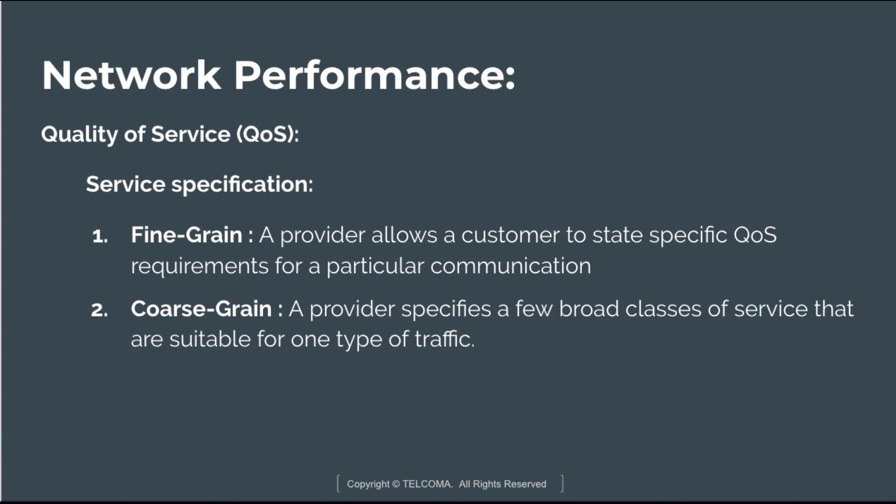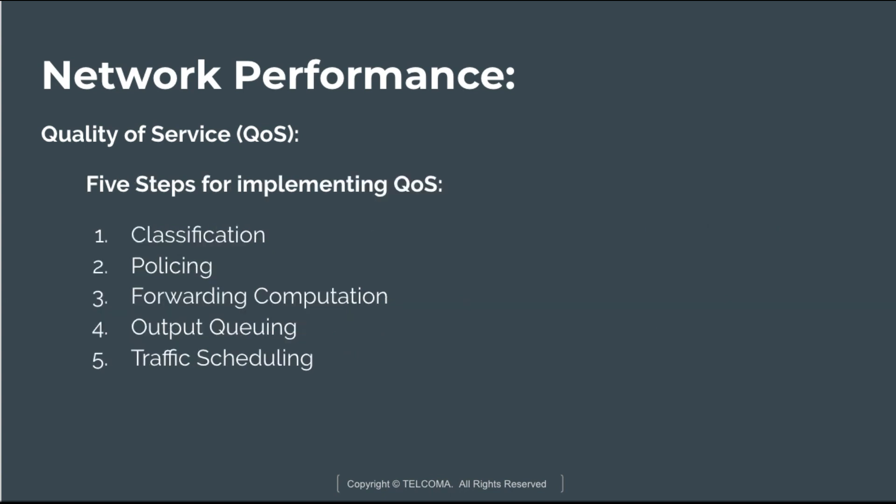The service specifications of QoS are fine-grain and coarse-grain. In fine-grain, a provider allows a customer to state specific QoS requirements for a particular communication; a customer makes a request each time a flow is created, for example in a TCP connection. In coarse-grain, a provider specifies a few broad classes of services suitable for one type of traffic, and a customer must fit all traffic into these classes.